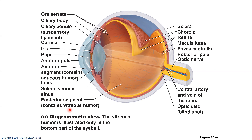Capillaries of the ciliary processes — the little finger-like projections from the ciliary body — secrete fluid. We also have ciliary zonules, which are ligaments that hold the lens in position. I'll show you the ciliary zonules in a moment.